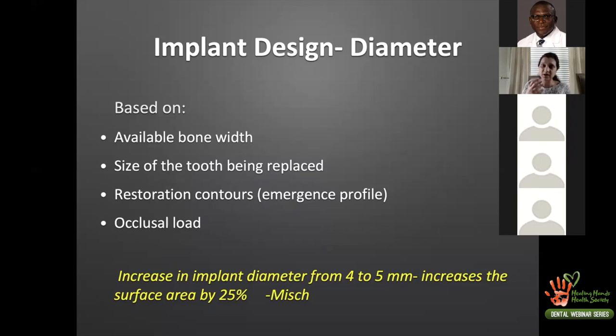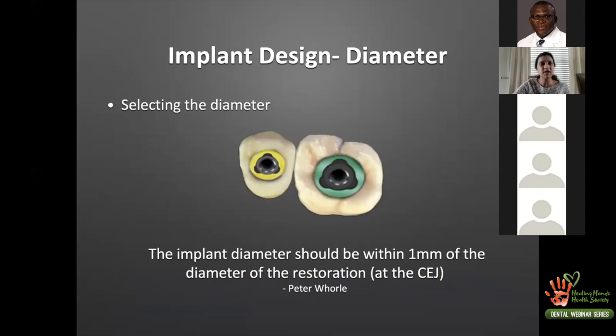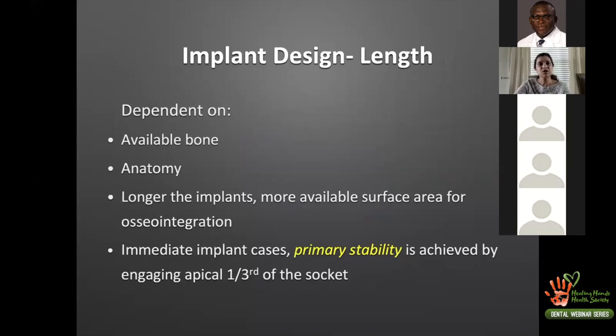As implant diameter increases, more bone contacts the implant body, creating a sturdier system. An important guideline from Peter Wohrle states that the implant diameter should be within 1 mm of the diameter of the restoration at the CEJ. We may not always achieve this in areas of limited interdental space, but the goal is that the implant body should be within 1 mm of the actual restoration diameter at the CEJ.